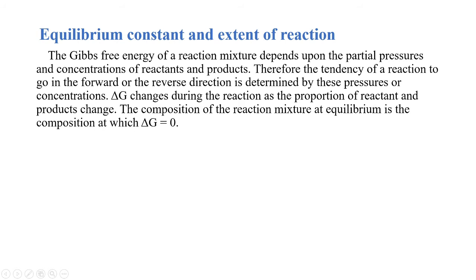You know that the Gibbs free energy of any reaction mixture depends upon its partial pressure as well as the concentration of reactants and products. So therefore the tendency of a reaction to go in the forward or the reverse direction is determined by the partial pressure or its concentration. So delta G changes during the reaction as the proportion of reactants and products changes. The composition of the reaction mixture at equilibrium is the composition at which the change in Gibbs energy is equal to zero.